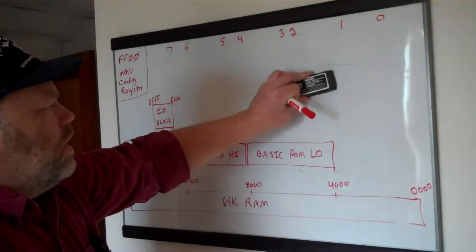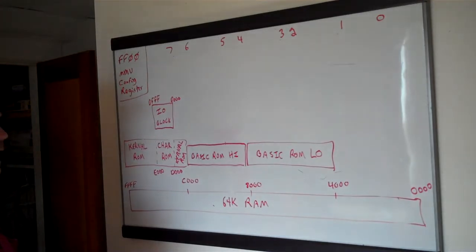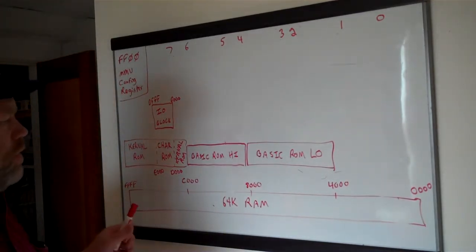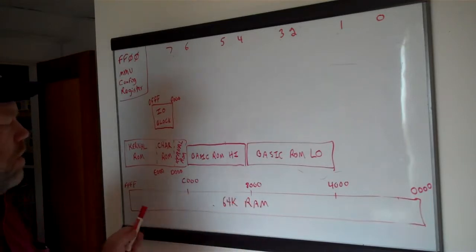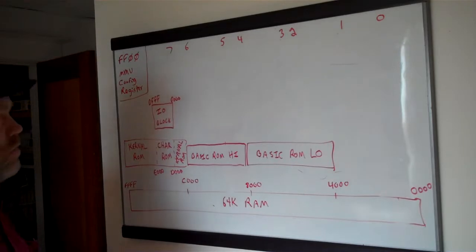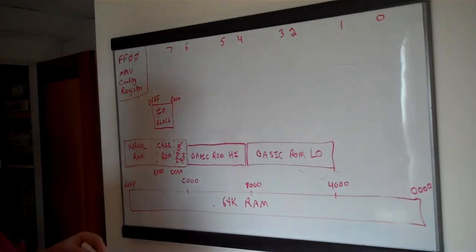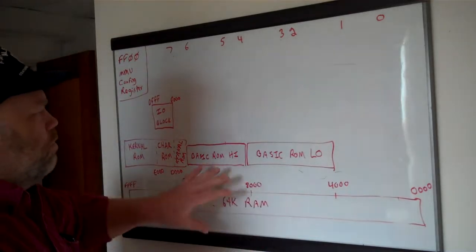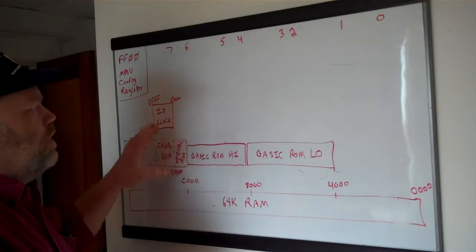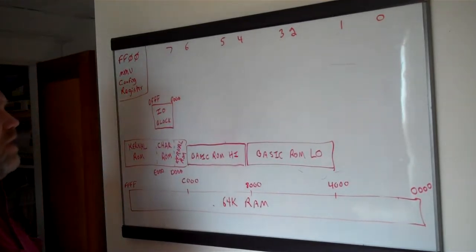The word 'bank' we kind of overuse — we use it to mean a few different things, which can add to the confusion. Sometimes we talk about a bank meaning a bank of RAM, like a 64K section of RAM, which the 128 has two of. But other times we use it to mean a memory configuration where you have different pieces of different chips banked in and activated. We use the word a couple of different ways.